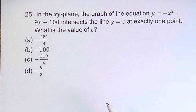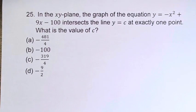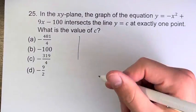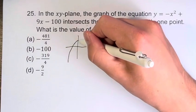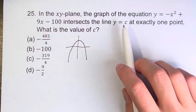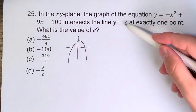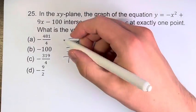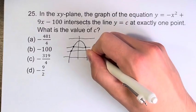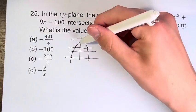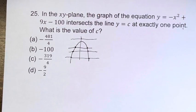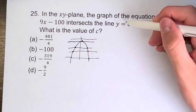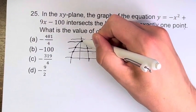The first thing we have to understand is: what does it mean for this equation to only intersect this line at one point? We can see that we have a quadratic, so let's draw a rough graph. We have a negative term in front of the x squared term, which means it is facing down. Now, y equals c is just a horizontal line at the y value c. For all of these lines, they either intersect at two points or don't intersect at any points — except for the specific case where the line intersects the vertex of the parabola. So c is the y value of that vertex.